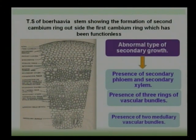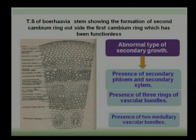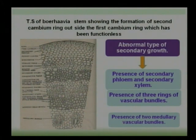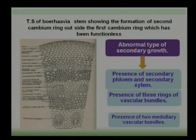The abnormal secondary growth totally depends on the outer ring. Each vascular bundle of the outermost ring is conjoint, collateral, and open type — meaning cambium is present as intrafascicular cambium. Between two bundles, interfascicular cambium is also developed. Later, the intrafascicular cambium and interfascicular cambium connect with each other, forming the complete cambium ring. That is the main point of anomalous secondary growth in Borhevia diffusa.